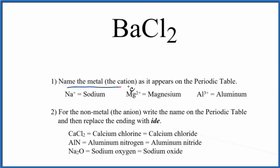First, we write the name for the metal as it appears on the periodic table. So Ba, that's barium. So we write barium.